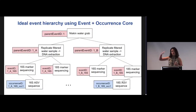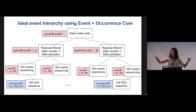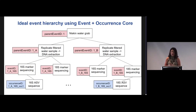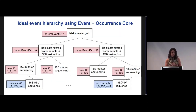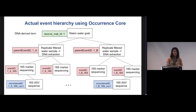Ideally, it would be great to really record the event hierarchy between the Niskin grab, our replicate water samples that are each extracted separately for DNA, and then the different treatments we did in the lab — whether 16S or 18S. Currently, GBIF does not allow you to link the DNA-derived extension with an event core. So we can't really have the hierarchy the way that would be most helpful, and that is used for other biodiversity observation hierarchies. But it sounds like the new data model will be helping fix that.